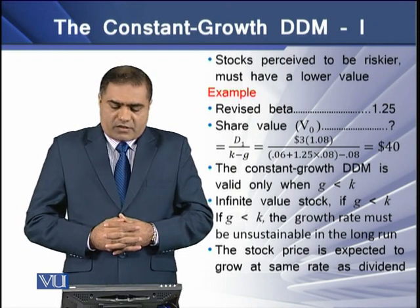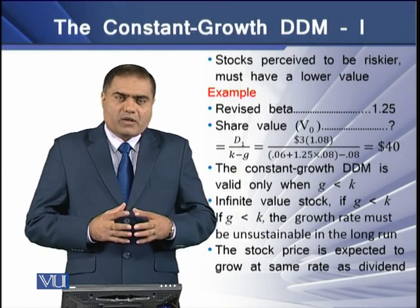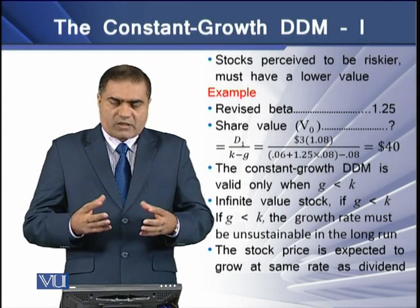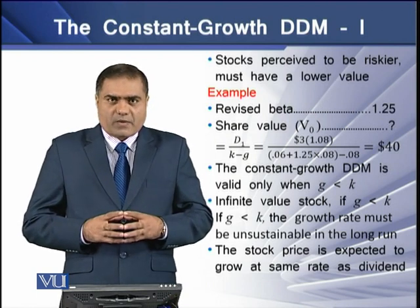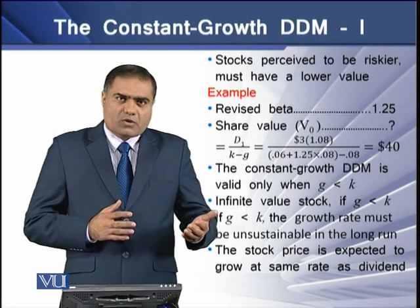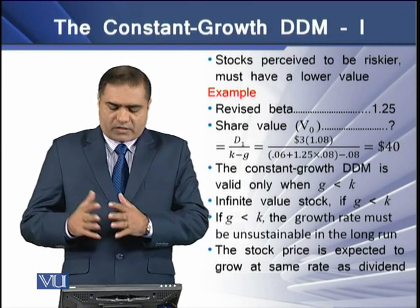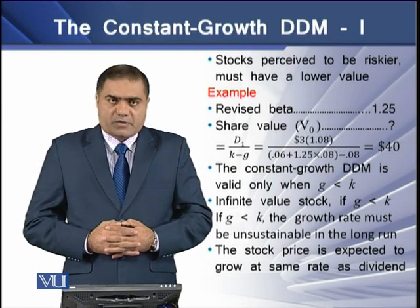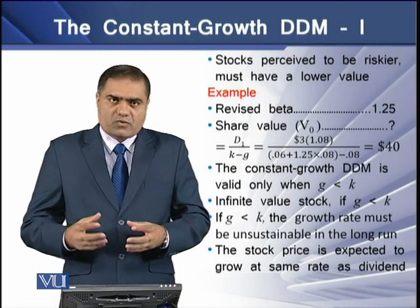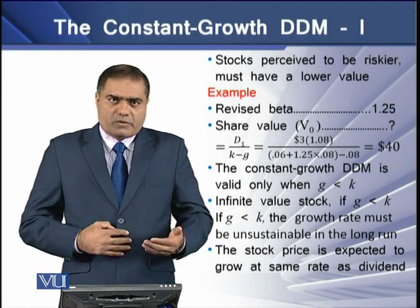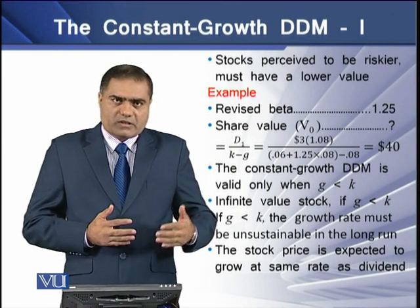Stocks perceived to be riskier must have a lower value. This means that if the stock is more risky, the required return on that stock will go higher, and as a result the price of the stock will go down — we have a lower V0 or intrinsic value. In the next example, we have a revised beta of 1.25 from our earlier illustration, and we again use the formula D1 over K minus G, with the same D1 as before.